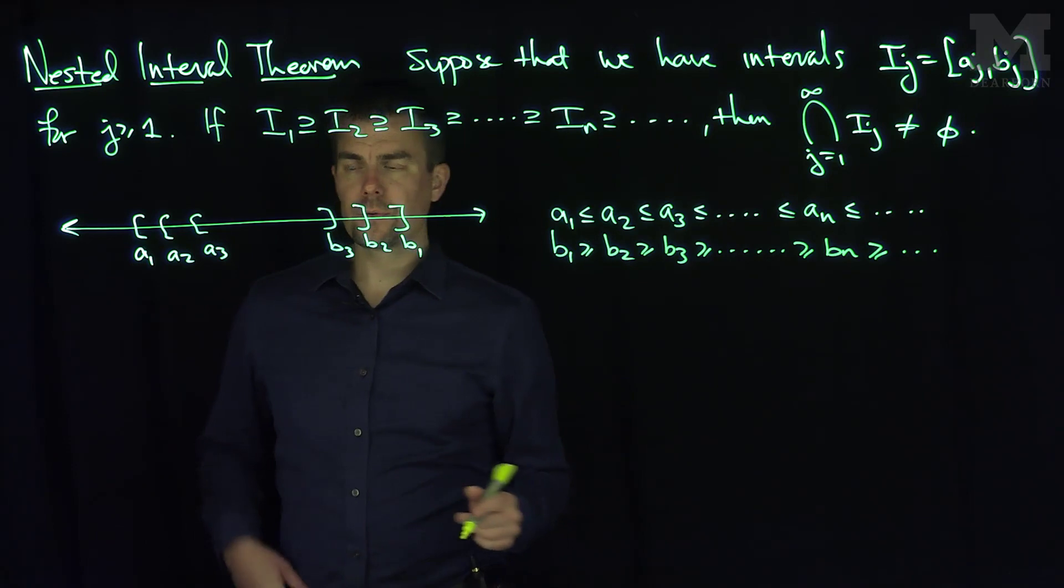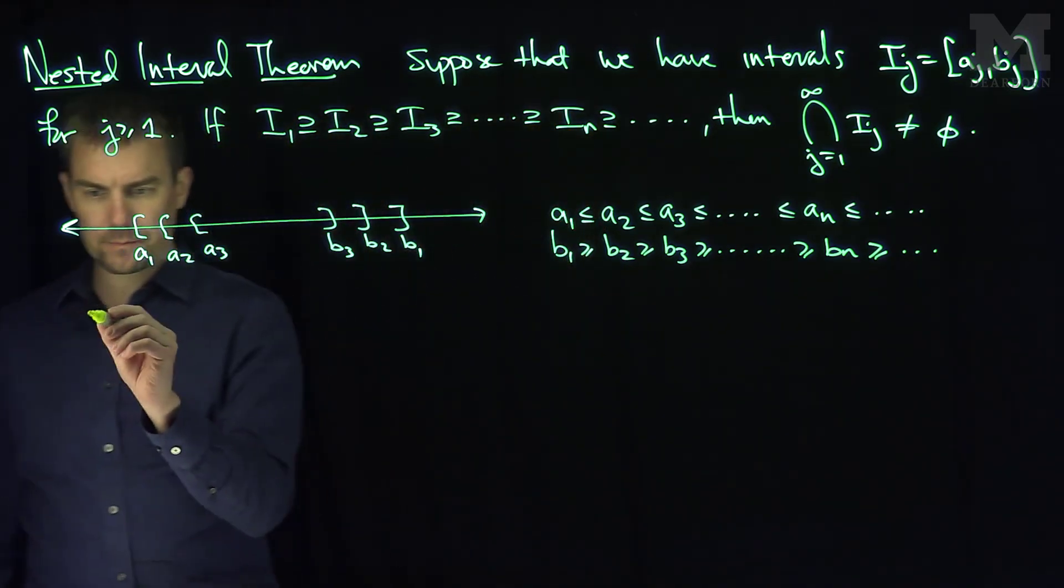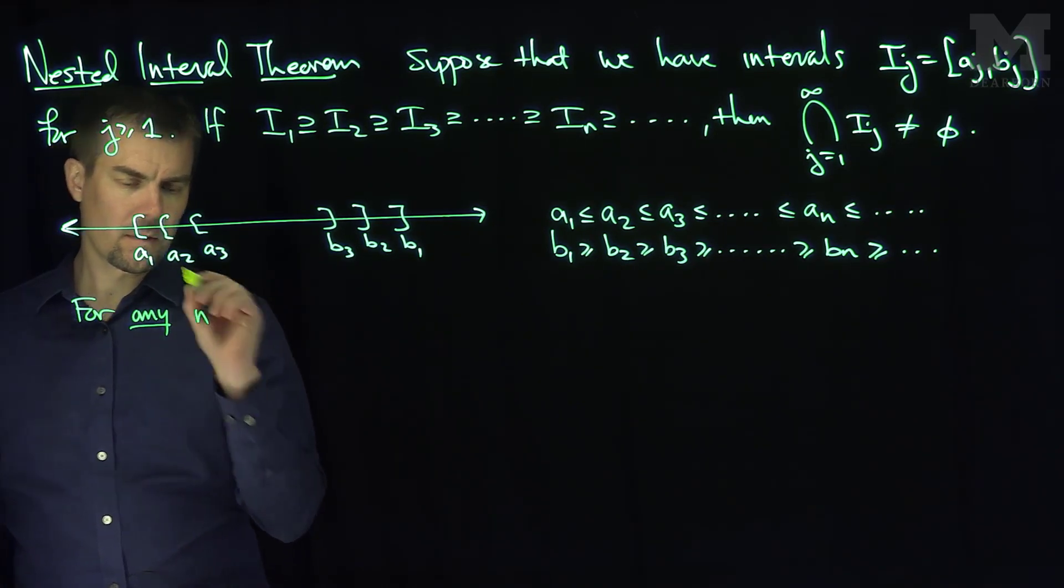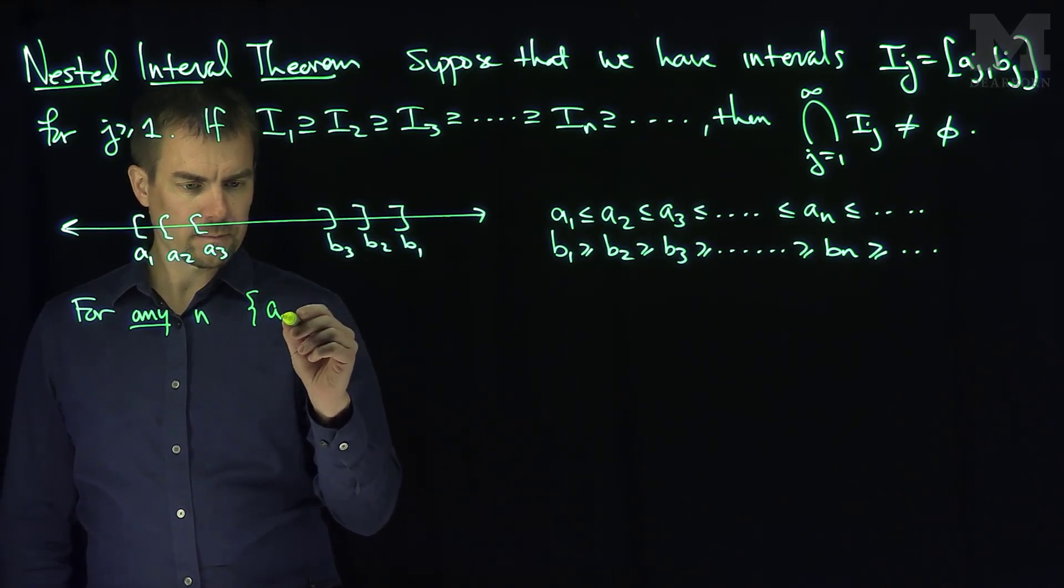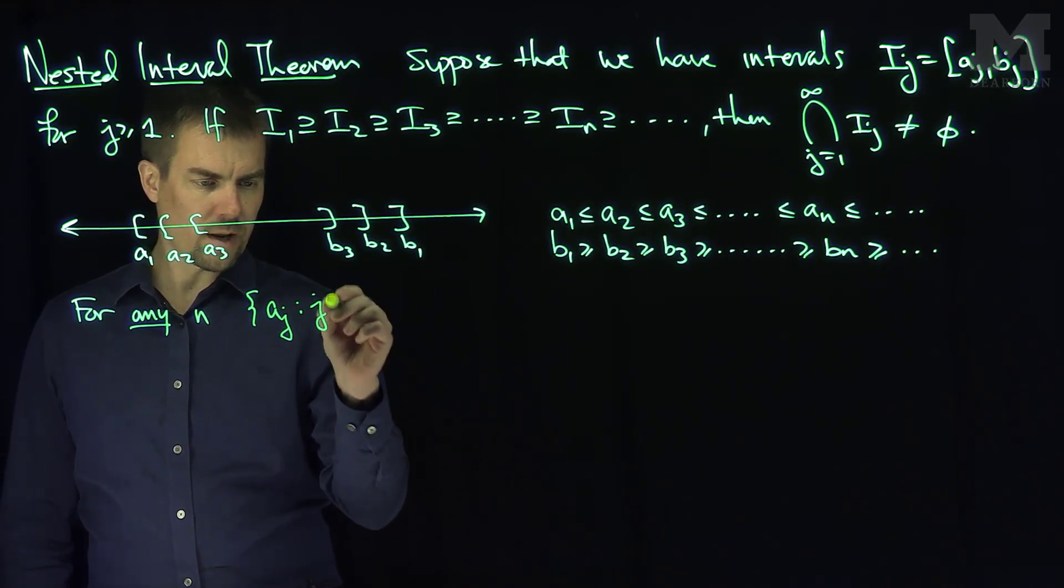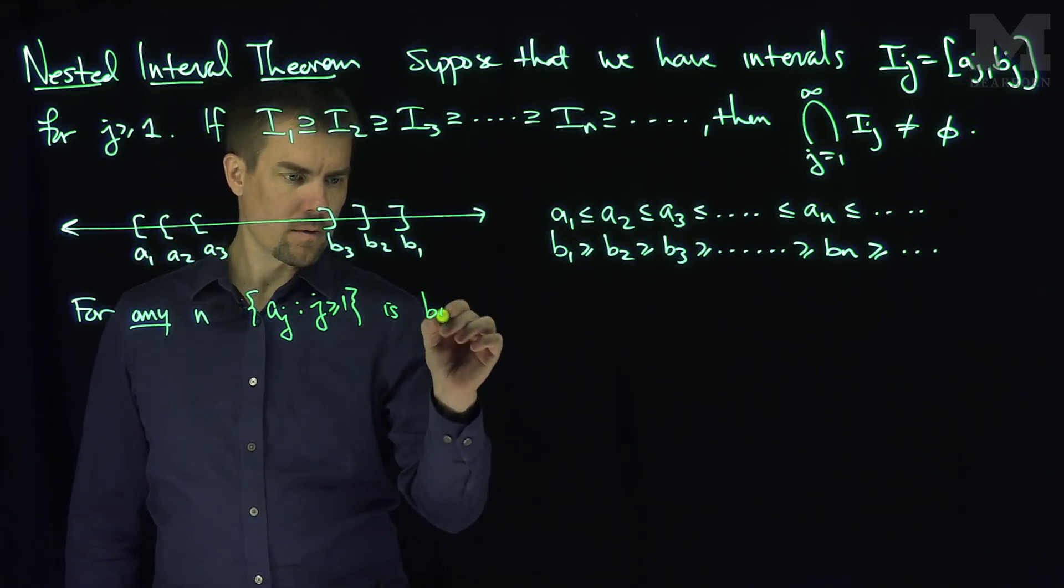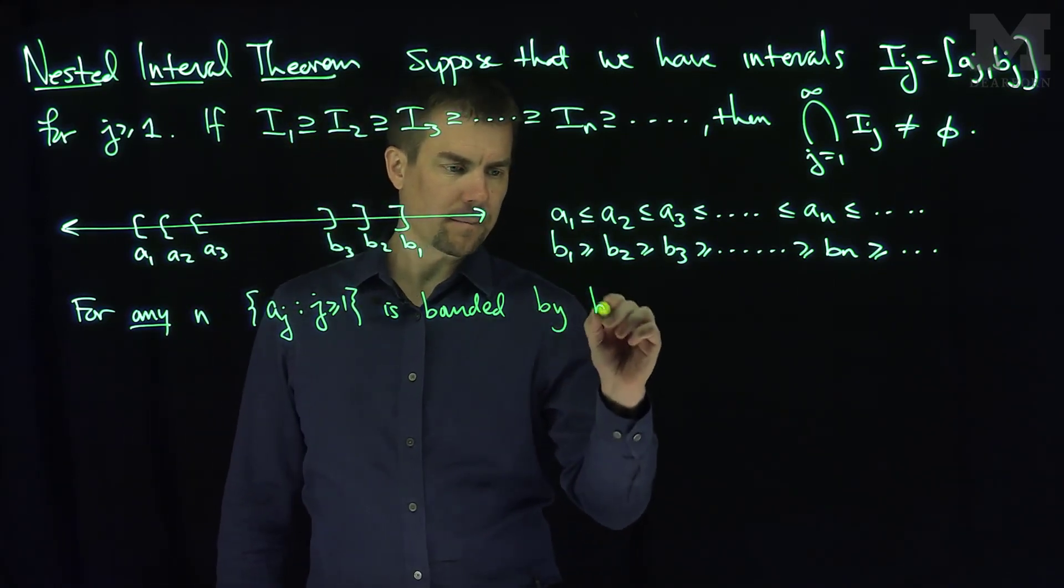And so we also know that every one of these a's is bounded by any one of the b's. So for any n, the collection of these points aj, j bigger than or equal to one, is bounded by bn.